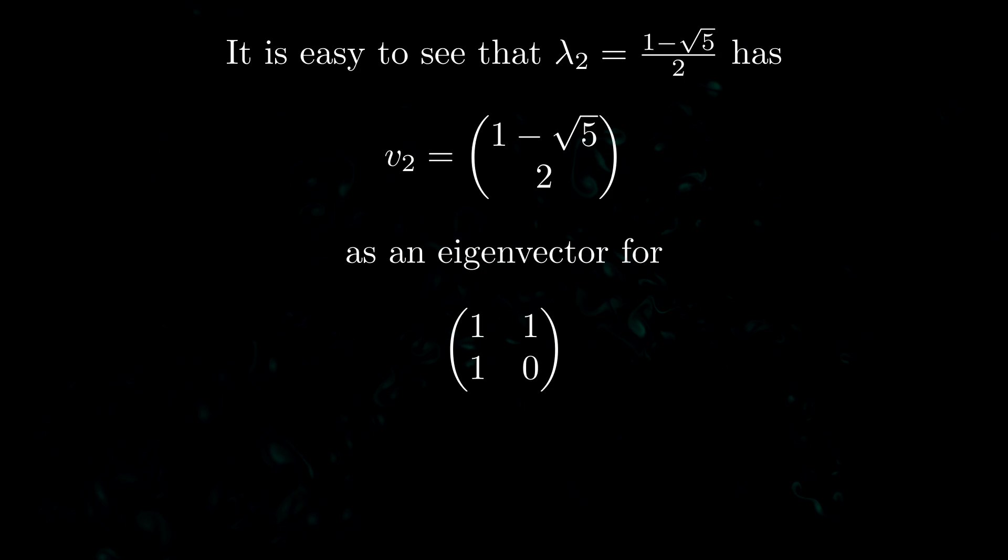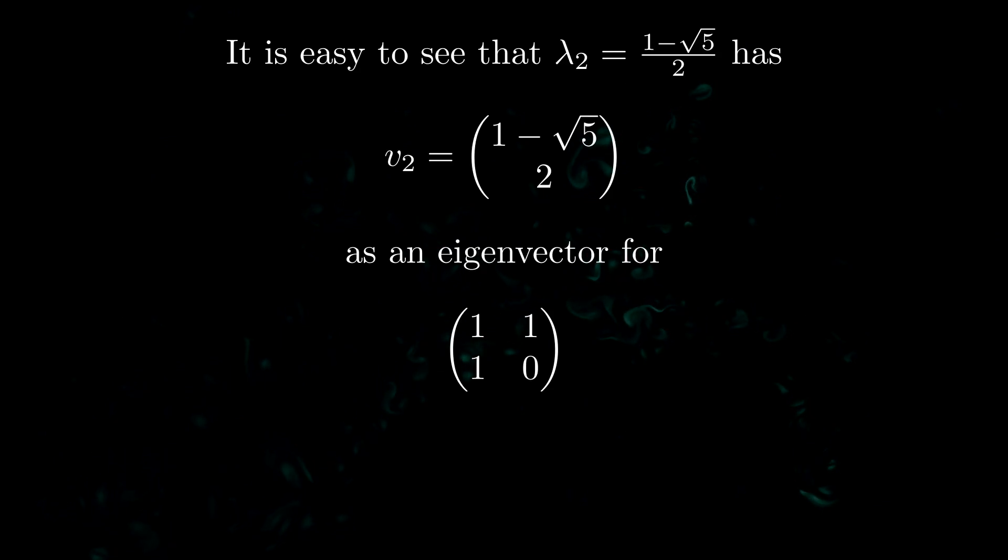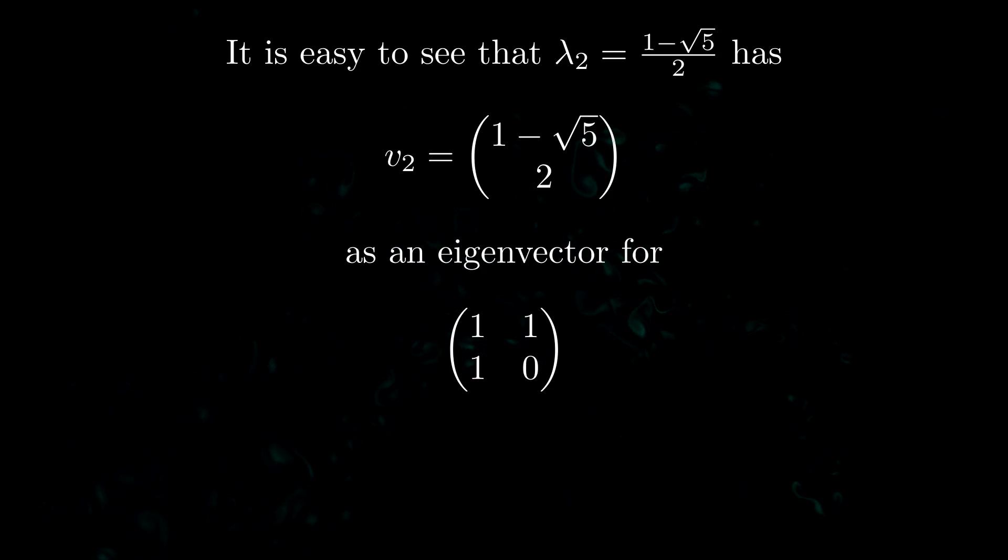And then for more or less the same reasons for the other eigenvalue lambda 2 equal to (1 minus root 5) over 2 we can choose v2 to be this vector and that will also be an eigenvector for our matrix.